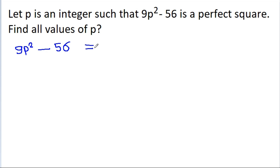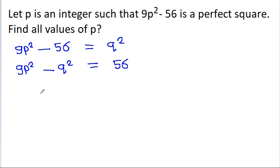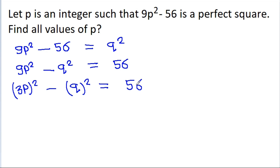Suppose it is equal to q squared, where q is any integer. Then we can write 9p squared minus q squared is equal to 56, and 9p squared is (3p) squared, so (3p) squared minus q squared is equal to 56. We know that a squared minus b squared is (a plus b)(a minus b).